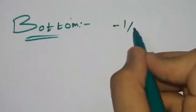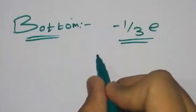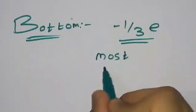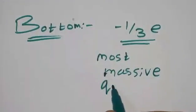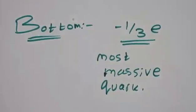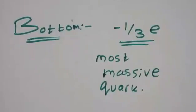Now we have the bottom quark, which has a charge of -1/3 e and is the most massive quark. So these are the quarks: up, down, charm, strange, top, bottom, with their specifications and charges.